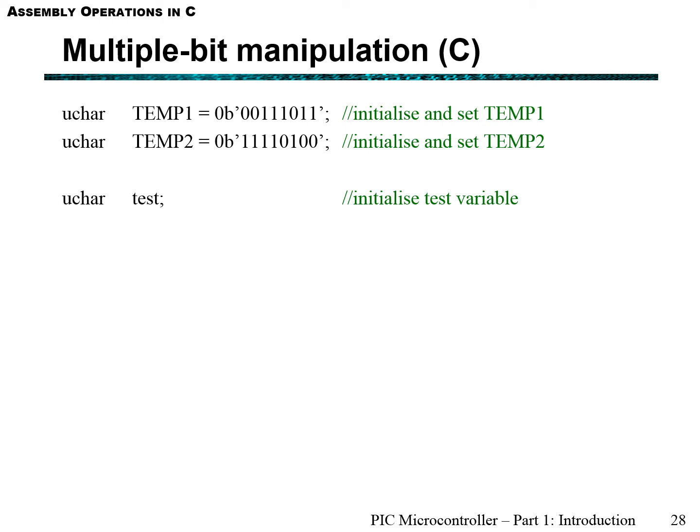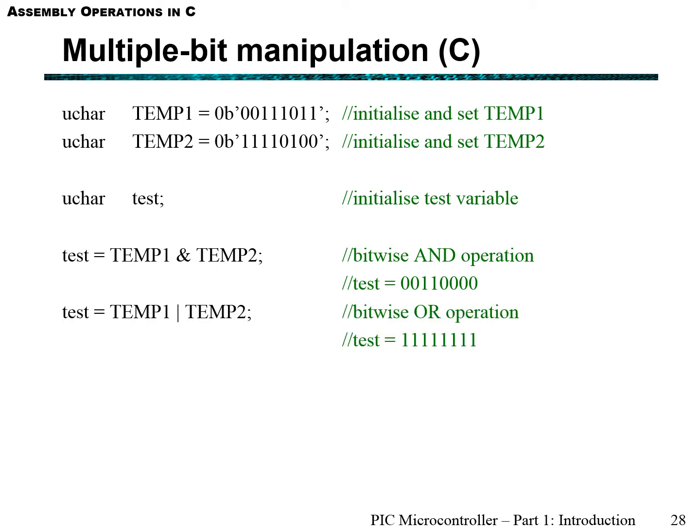Let's look at multiple bit manipulation. As you've seen in the instruction sets, there are two or three categories of manipulation in assembly: single bit manipulation and multiple bit manipulation. C has the same capabilities as assembly does. Let's say we initialize two variables called temp1 and temp2, and another variable called test to put our results in. In C, the operator is the ampersand and that applies an AND operation for the respective bits of both variables. The result for test should be 00110000. The same can be done with a bitwise OR operation and the exclusive OR operation.